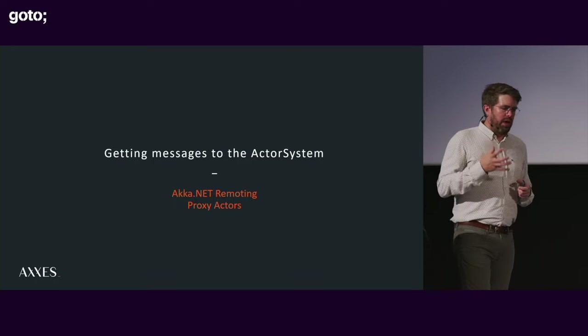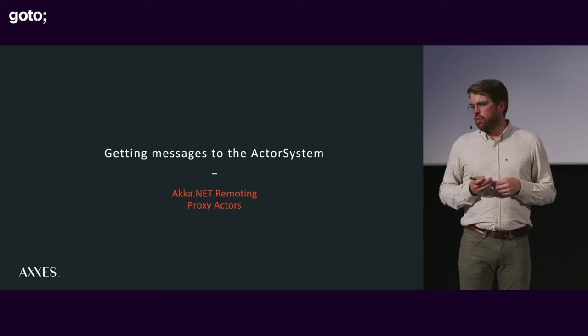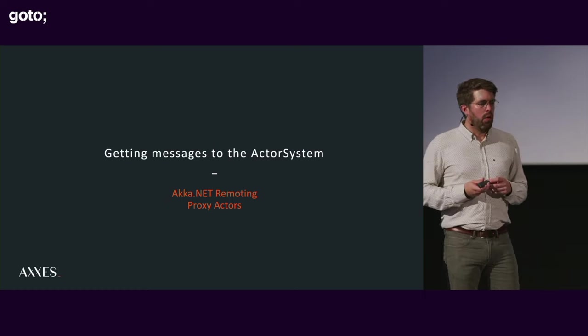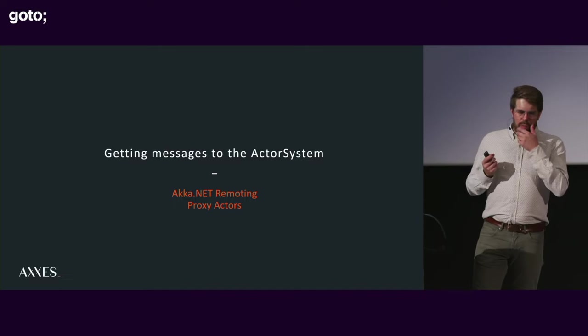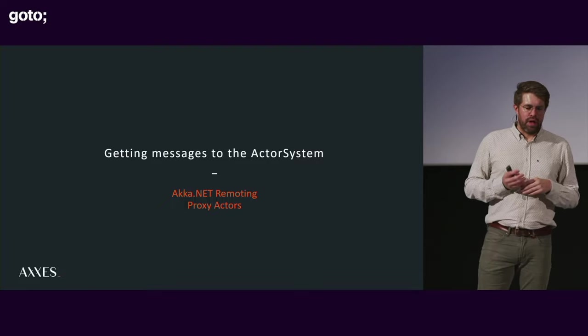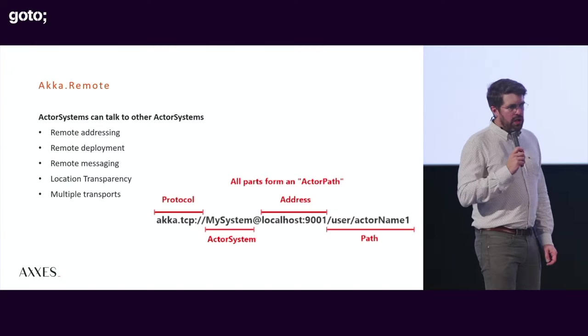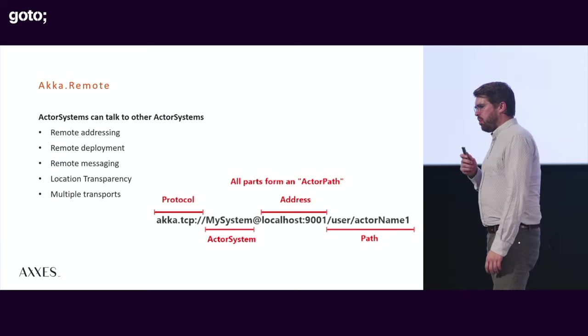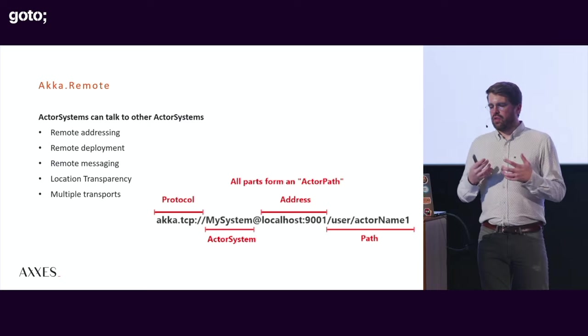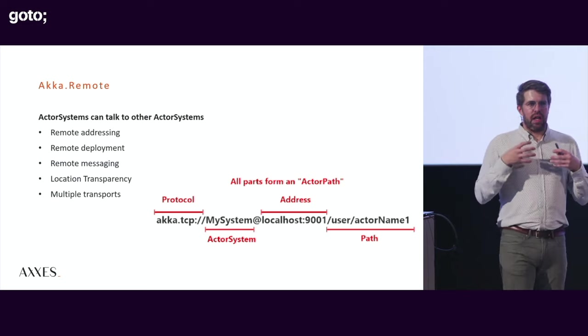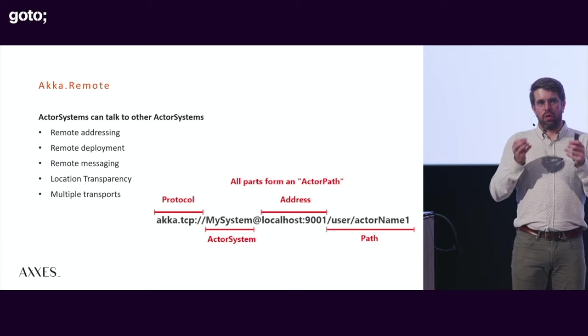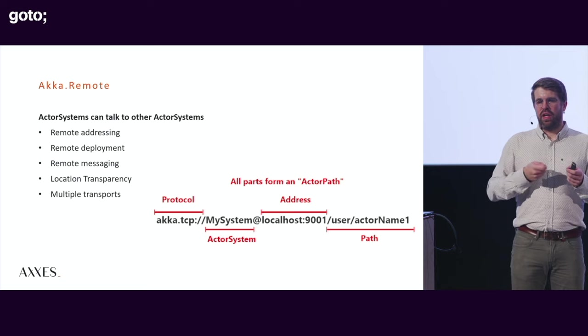Doing normalization in one place makes writing the rest of your application so much easier. The next problem is getting messages to our Akka.NET cluster. Our actors live inside the cluster, but from the outside we have to get messages to them. Akka.Remote is a way to talk to one actor system from another. As a client application, you spawn your own local actor system, generate top-level actors there, and those use the Akka.Remote package to talk to the remote actor system at the other end.